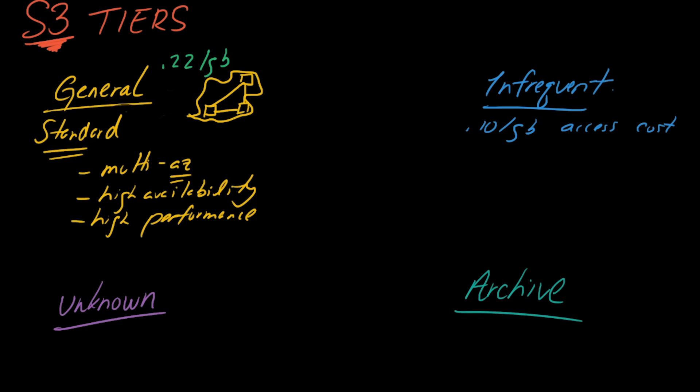So within infrequent there are two different tiers. The first one is called standard. And standard has lower availability than general. So I believe the availability on general is 99.99% and for standard it's 99.9%. Huge difference. So lower availability.